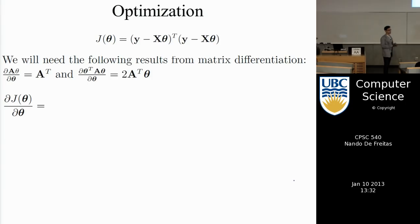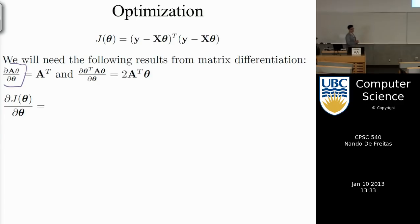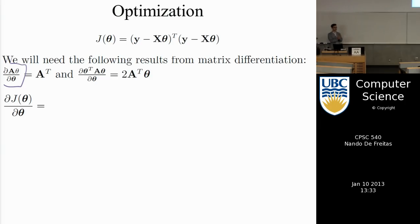Fortunately we have matrices, and matrix calculus gives us compact properties. I'll state two results — they're easy to prove and you can find proofs on Wikipedia. Property 1: the derivative of a linear form aᵀθ with respect to θ is aᵀ (the matrix transpose). Property 2: the derivative of a quadratic form θᵀAθ with respect to θ is 2Aᵀθ. These allow us to compute all derivatives in one step rather than one parameter at a time.